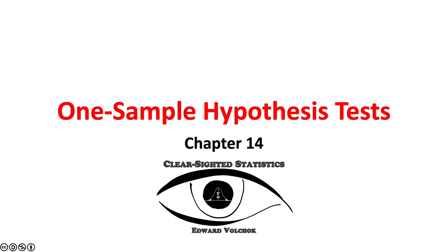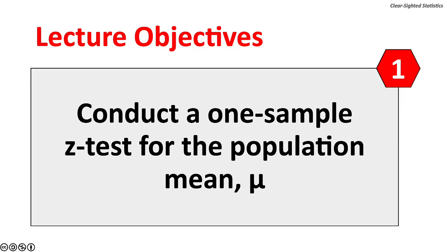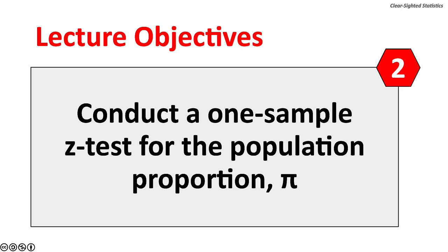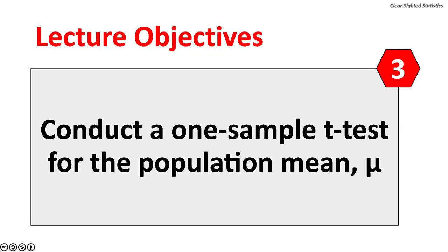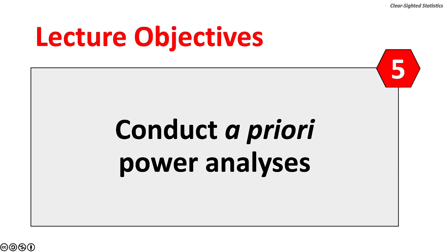In Chapter 14, we will cover the three basic one-sample null hypothesis significance tests. This lecture has five objectives: (1) conduct a one-sample z-test for the population mean mu; (2) conduct a one-sample z-test for the population proportion pi; (3) conduct a one-sample t-test for the population mean mu; (4) calculate and interpret effect size; and (5) calculate a priori statistical power and the probability of committing a type 2 or beta error.